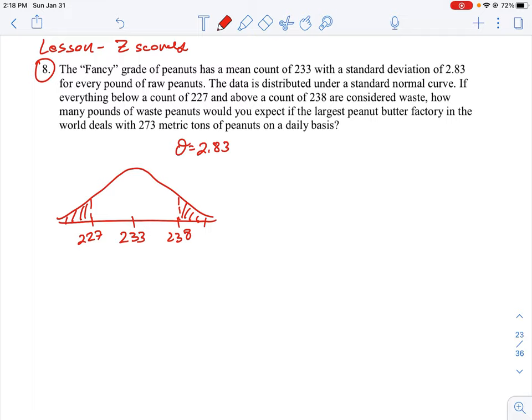The question is we're looking to determine waste here. So the waste is represented by the shaded parts on the curve. There are a couple of ways we could approach this. We could use the normal CDF function on the calculator to calculate the area between the two values, and then subtract that from 1, which would give us the waste.